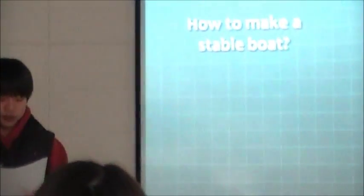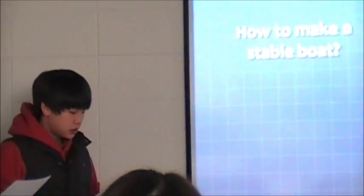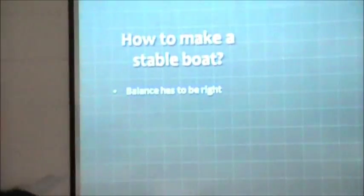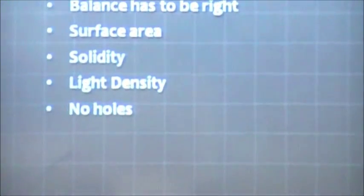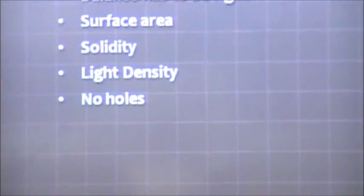So, how do we make a boat stable? All we need to make a boat stable is balance of the boat, surface area, solidity, density, and holes are the key points for making it balanced.